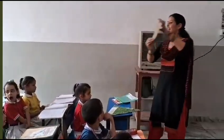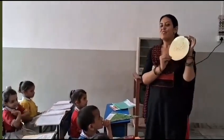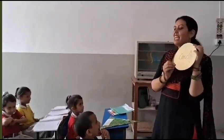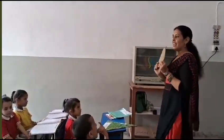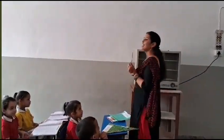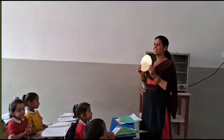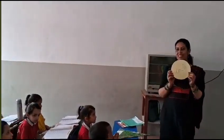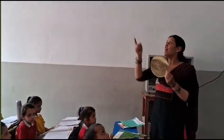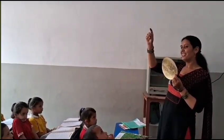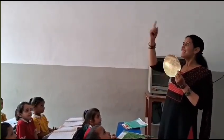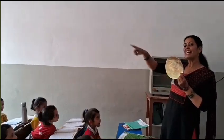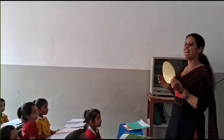This is a? Circle. Very good. Give me some example of a circle. Zero. Very good.